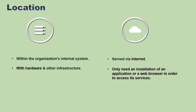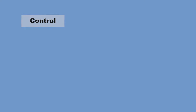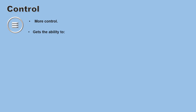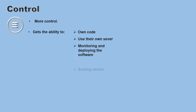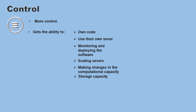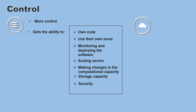In the on-premise model, the user gets more control compared to the cloud model because they get the opportunity to write their own code, use their own server, monitor and deploy the software, scale these servers, make changes in the computational capacity and storage capacity, and even take care of their own security. In the cloud platform, all of these are provided and controlled by the cloud provider.